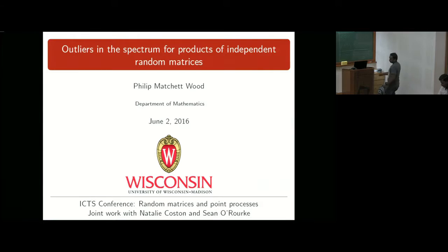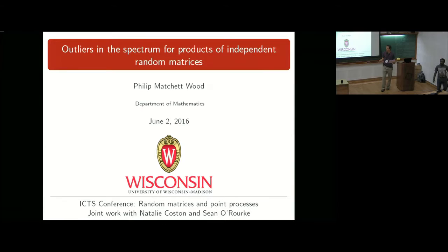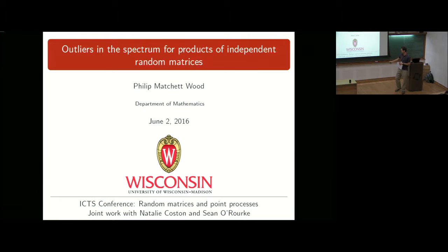Good morning. I'd like to thank the organizers for the invitation and for hosting this wonderful conference at ICTS. I'm going to talk about outliers for products of independent random matrices, and this is all joint work with Natalie Koston and Sean O'Rourke. Sean's at Colorado University Boulder, and Natalie was a graduate student there and is now a practicing data scientist.